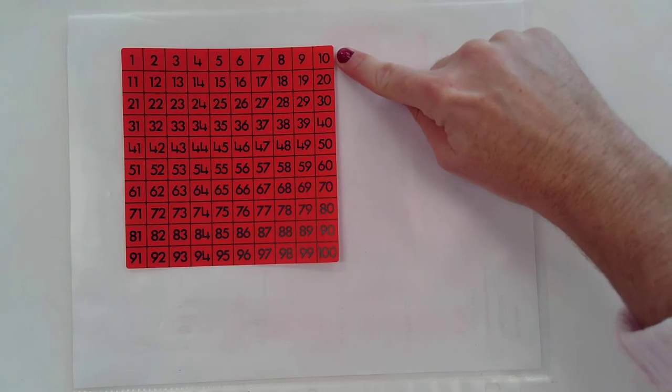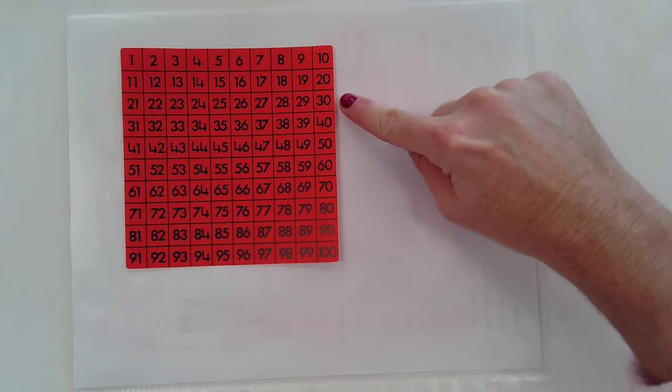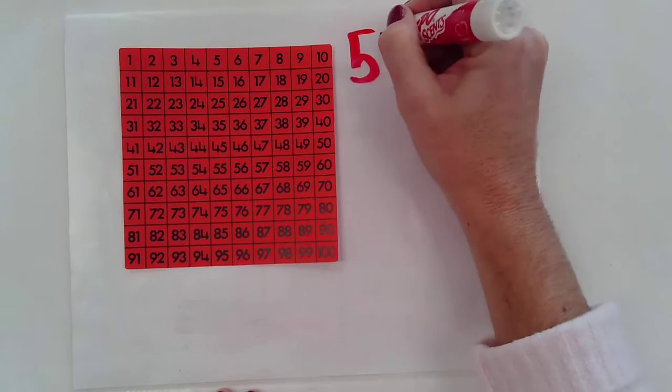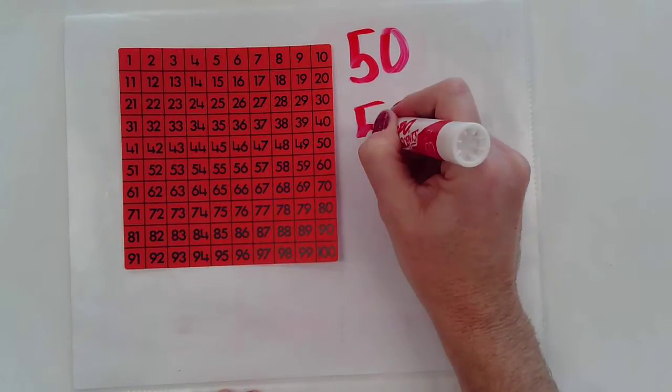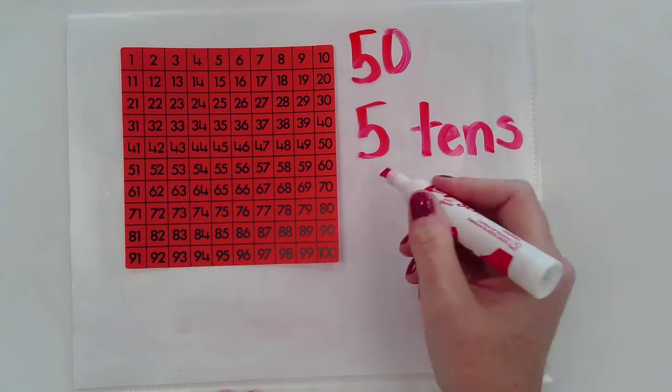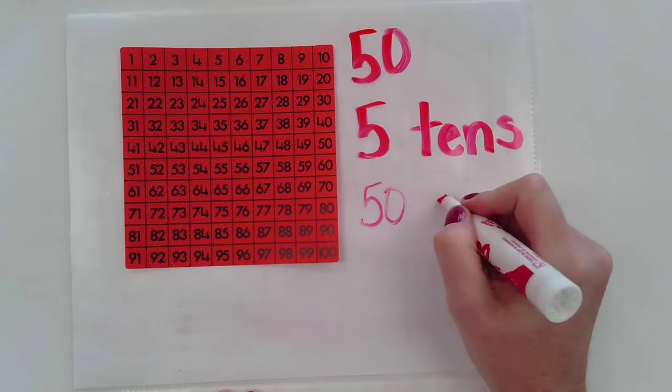So when we think about ten, twenty, thirty, forty, fifty, I know that fifty is made up of five tens, or it's made up of fifty ones.